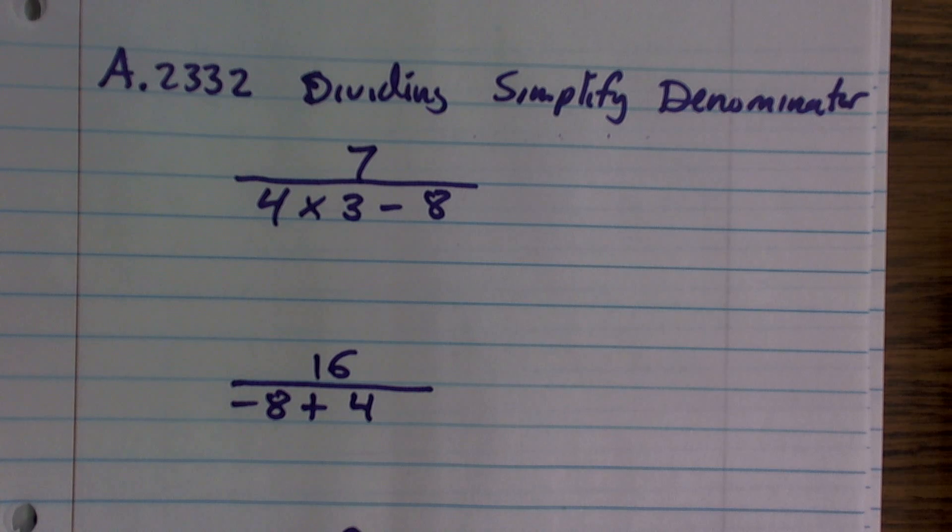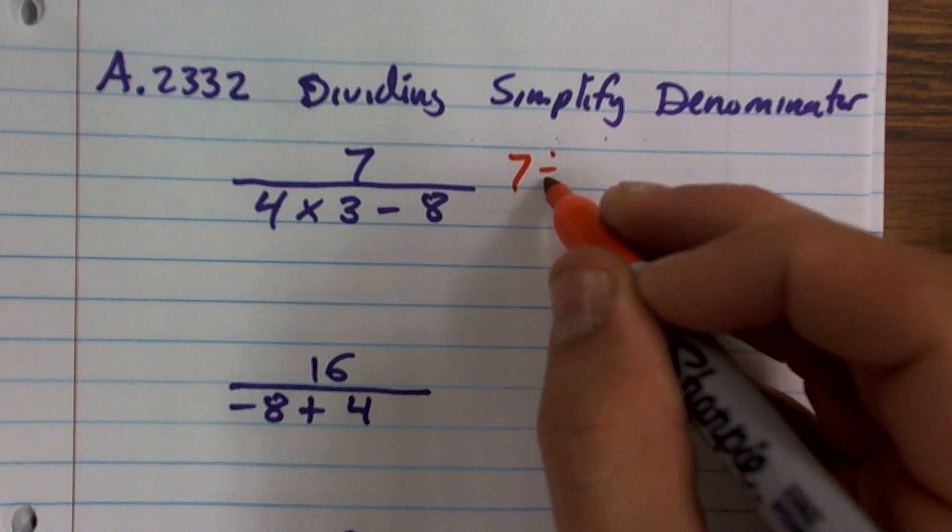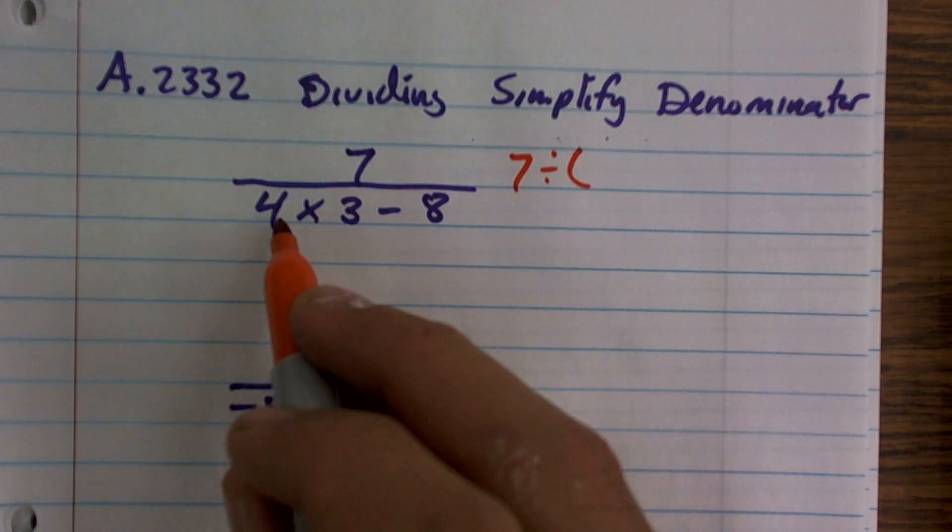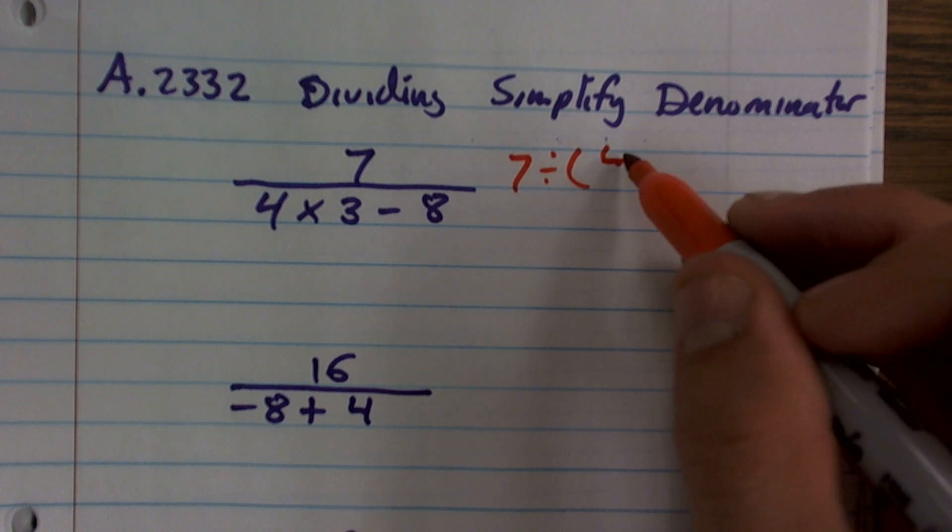So when trying to solve these problems, the main important thing I want to look at is let's rewrite this when it's not looking like a fraction. So what this really states is 7 divided by not just 4, not just 3, not by negative 8, but by all of them.